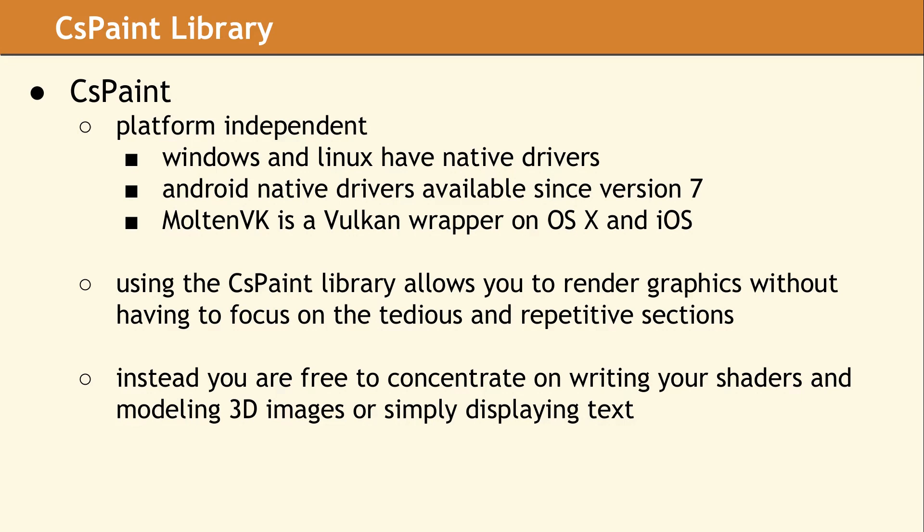Things like memory allocation, creating buffers, image transfer barriers, and swap-chain revalidation are critical and need to be handled properly in order to render. These parts and many others can be automated, and that is what cspaint is addressing. By using cspaint, developers will be able to focus less on the tedious details and more on their UI design and writing cool shaders.